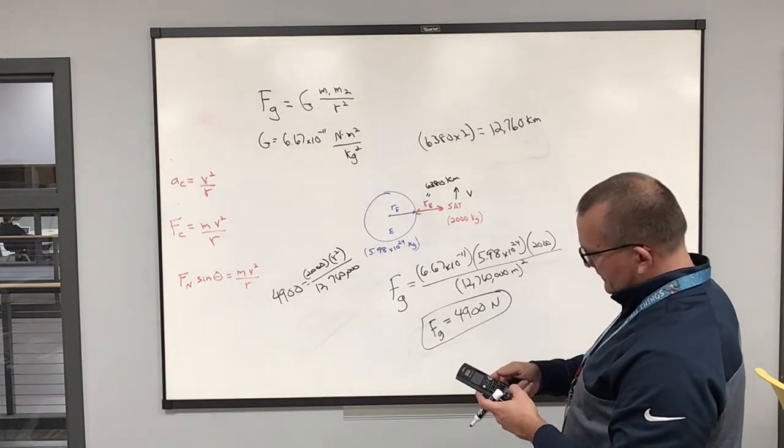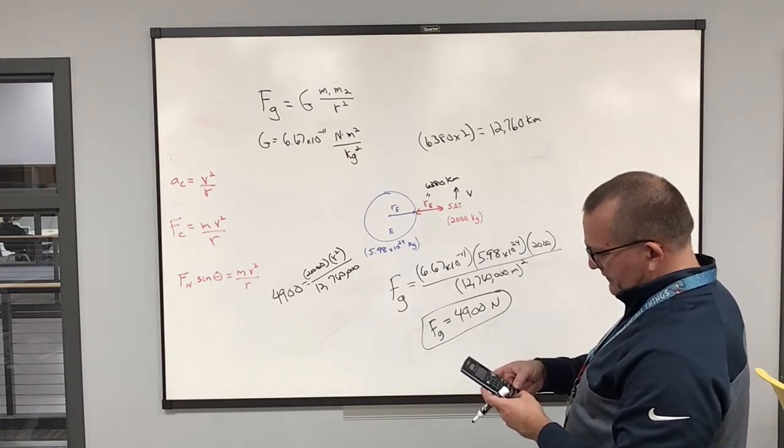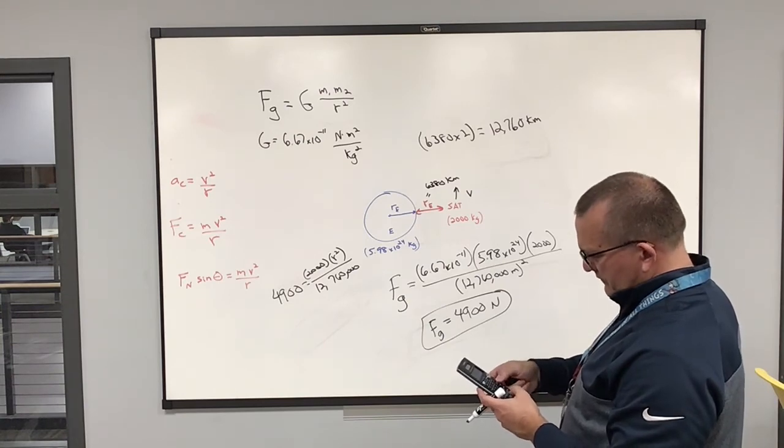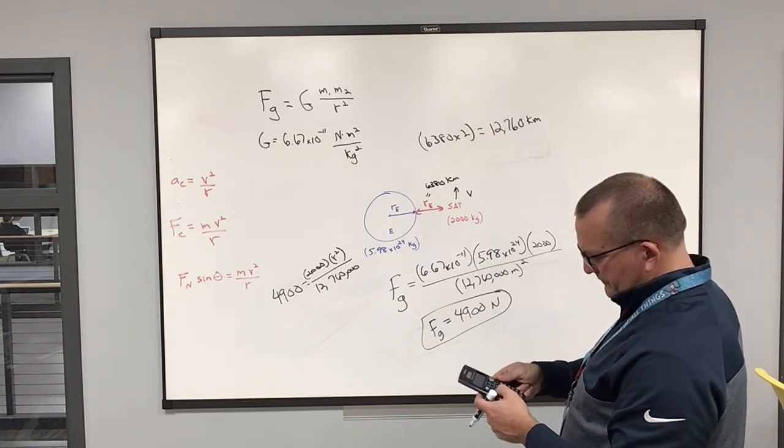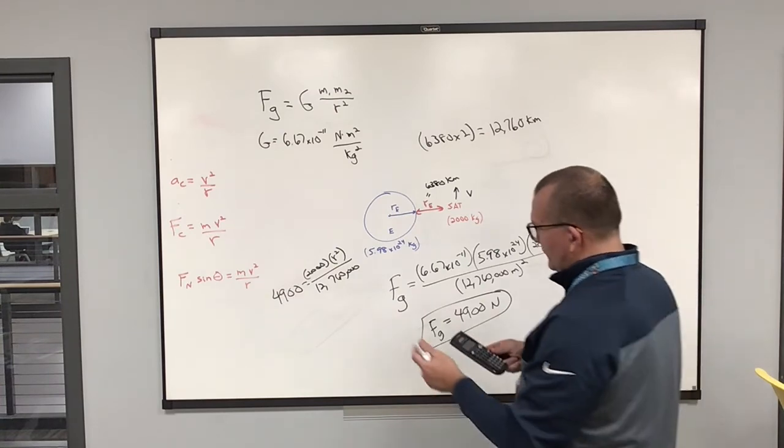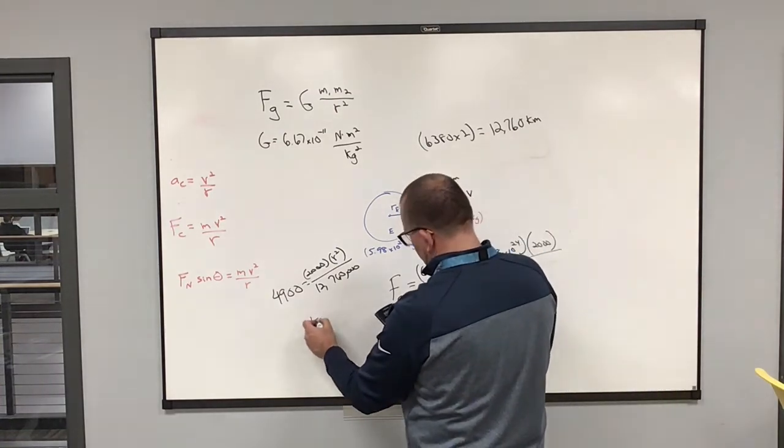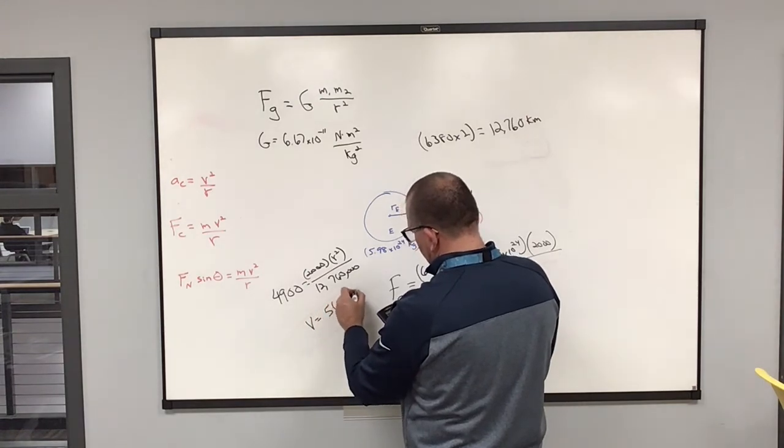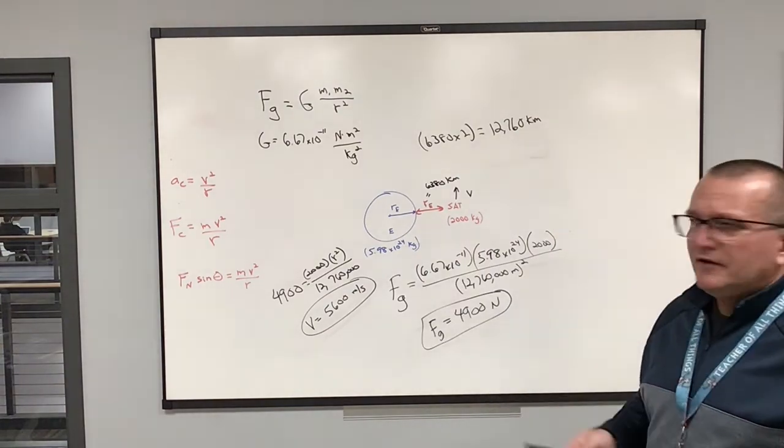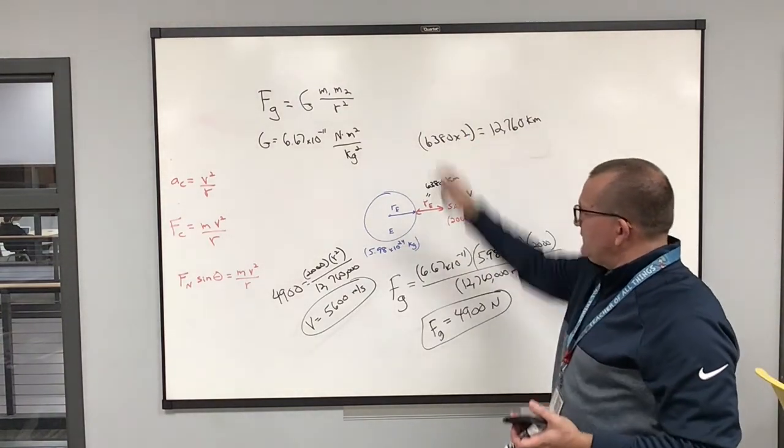So, 4900 times 12,760 three zeros divided by 2,000. And we get a velocity of 5,600 meters per second. It's rounded. But that's how fast this thing's traveling. Now, you're like, man, that's really fast. Well, it is really fast, but think about the distance here. It's going around.